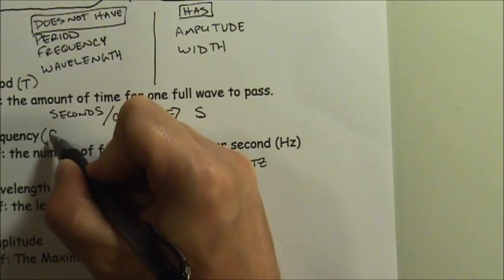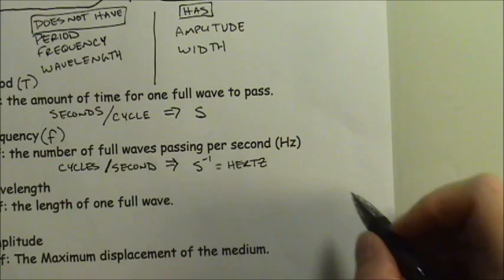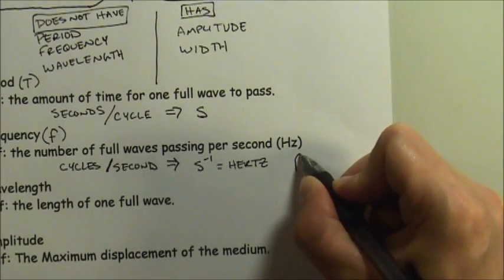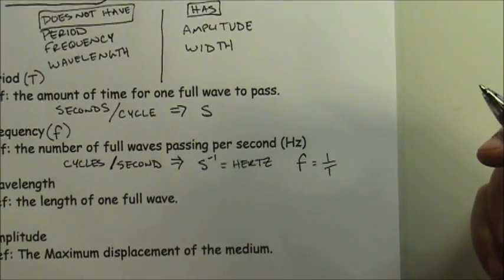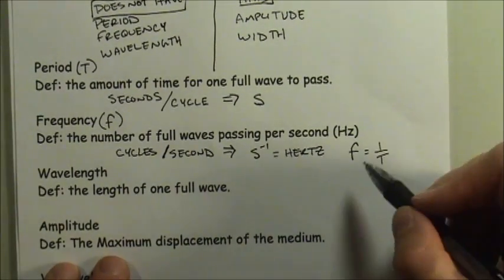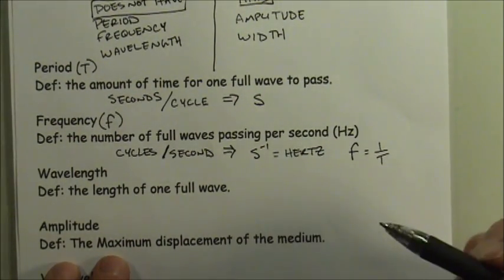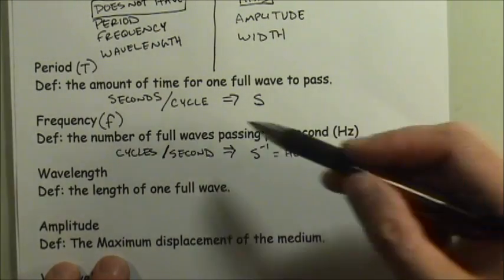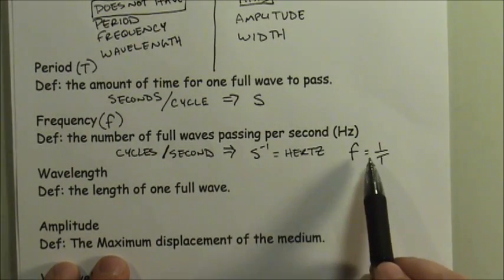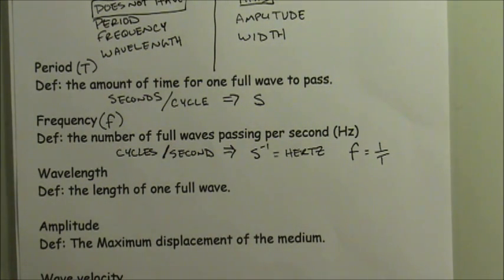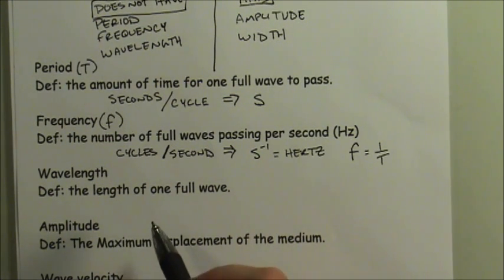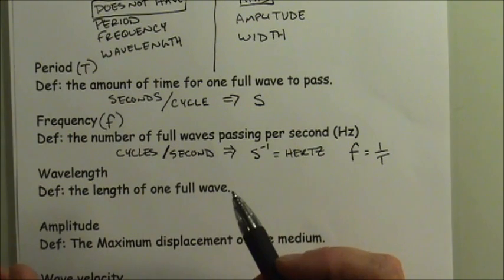The equation relating period and frequency is simple. Frequency is symbolized by lowercase f, and we calculate it by taking the inverse of the period: f = 1/T. These two are interchangeable - you can rearrange to get T = 1/f. You can calculate either one from the other.